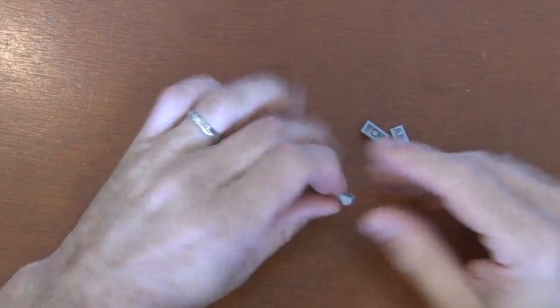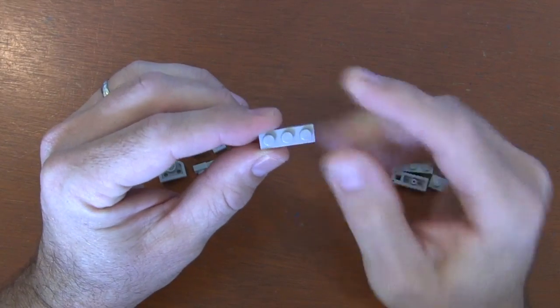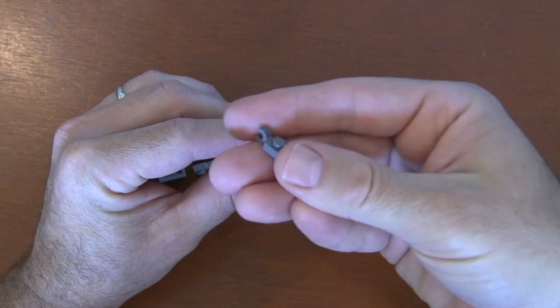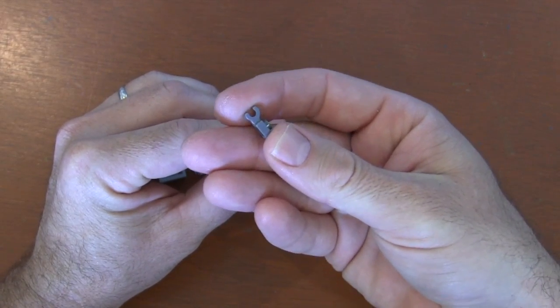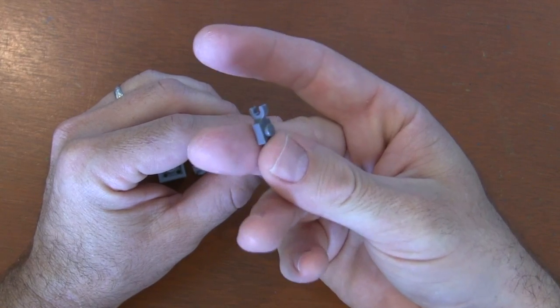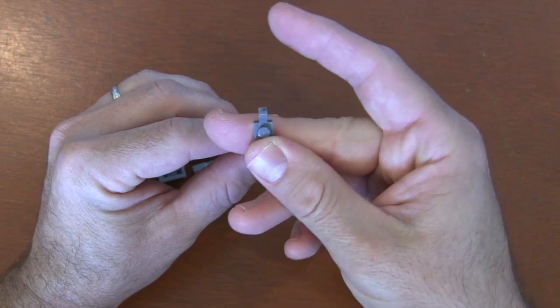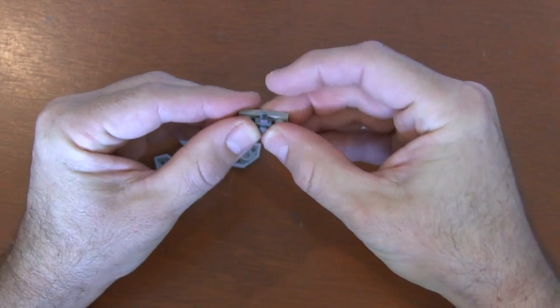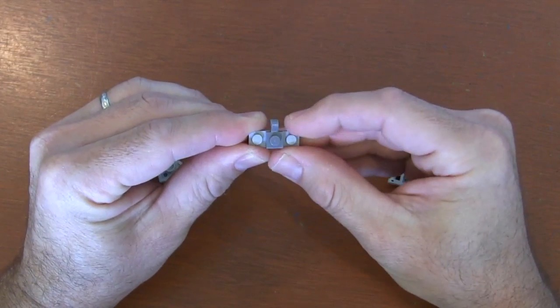We're going to start with the legs. Get a 1x3 plate, and on that center stud, grab a 1x1 plate with clip. This is a horizontal gripping clip. We're going to put that clip facing up because that's where our head attaches. Put that 1x1 plate on the center stud with it facing up.